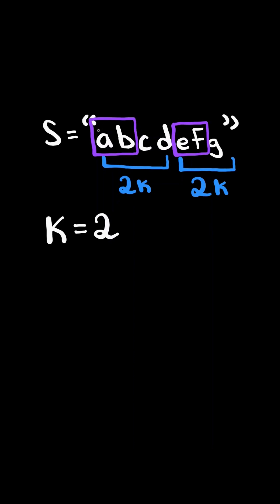For example, we will reverse the first k characters in block 1 to make ba, and we will reverse the first k characters in block 2 to make fe, and at the end return the new string.